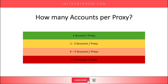The next question is how many accounts can you run per proxy — and the answer is similar. Running one account per proxy is the safest route. If you run more than one account per proxy it gets progressively less safe. You shouldn't run more than five accounts per proxy. In the past I've used three accounts per proxy — I don't do that anymore. It did work in the past and some people still do it, but it really depends on what kind of proxy you have.